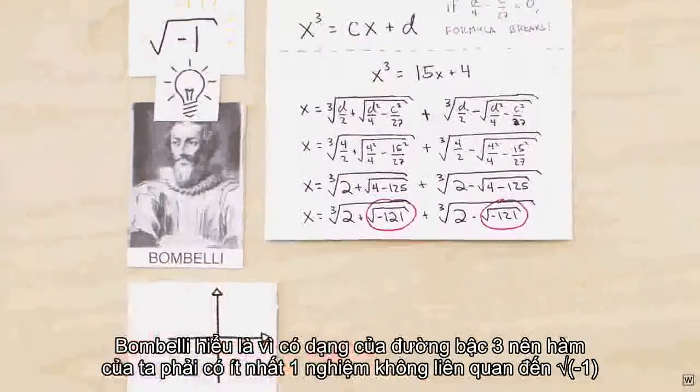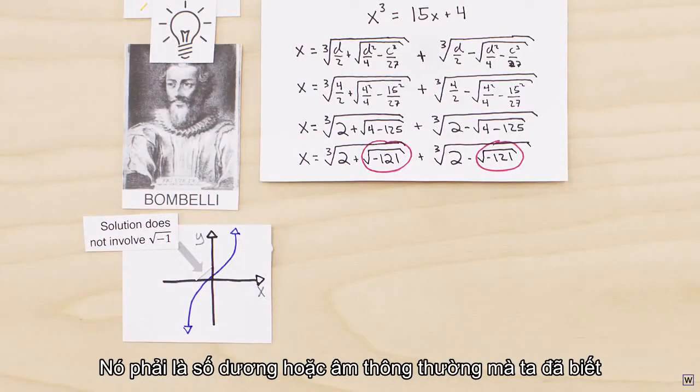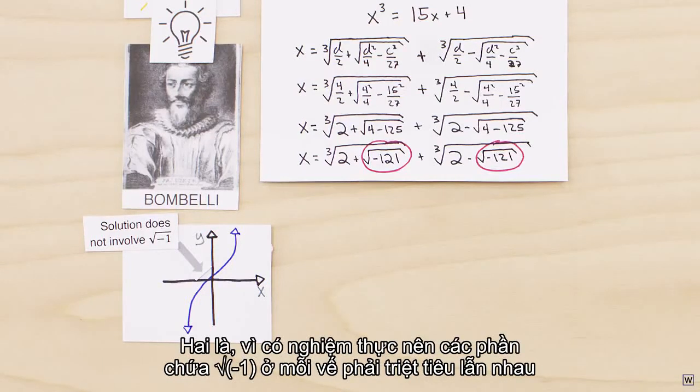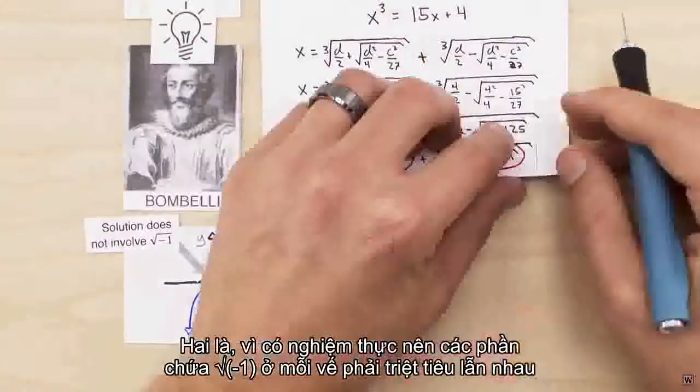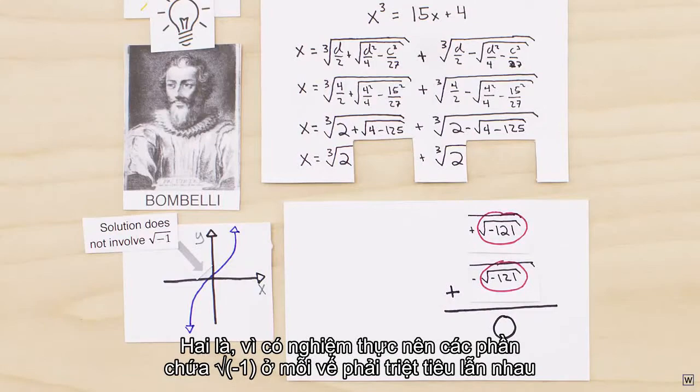Bombelli knew that because of the way cubics are shaped, our function had to have a solution that didn't involve the square root of minus one. It had to be a plain old regular positive or negative number. His second big insight was that for this to be the case, the root of minus one parts of each half of the equation must cancel out when added together.